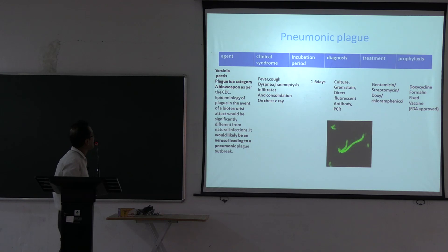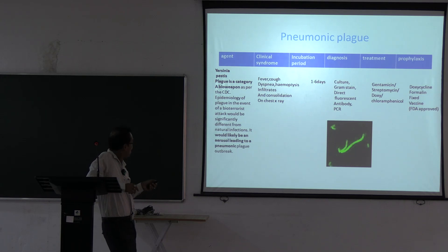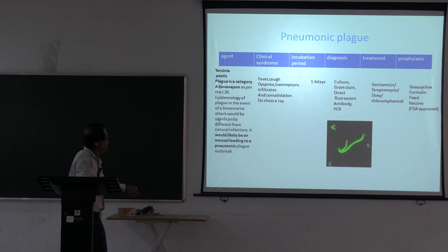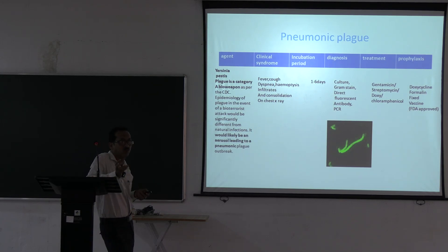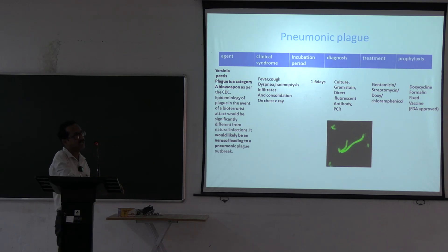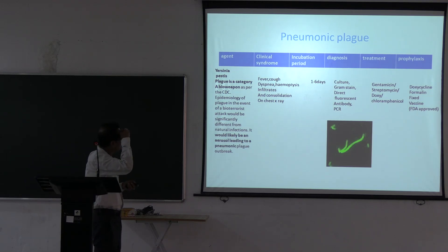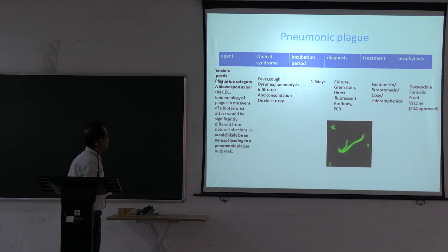Plague (Yersinia pestis) is a Category A bioweapon per CDC. When used as a bioweapon it would likely be aerosolized, leading to pneumonic plague with fever, dyspnea, hemoptysis, and consolidation — rather than the bubonic form (lymph node enlargement). Diagnosis is by culture, Gram stain, and PCR. Treatment: gentamycin, streptomycin, or doxycycline.